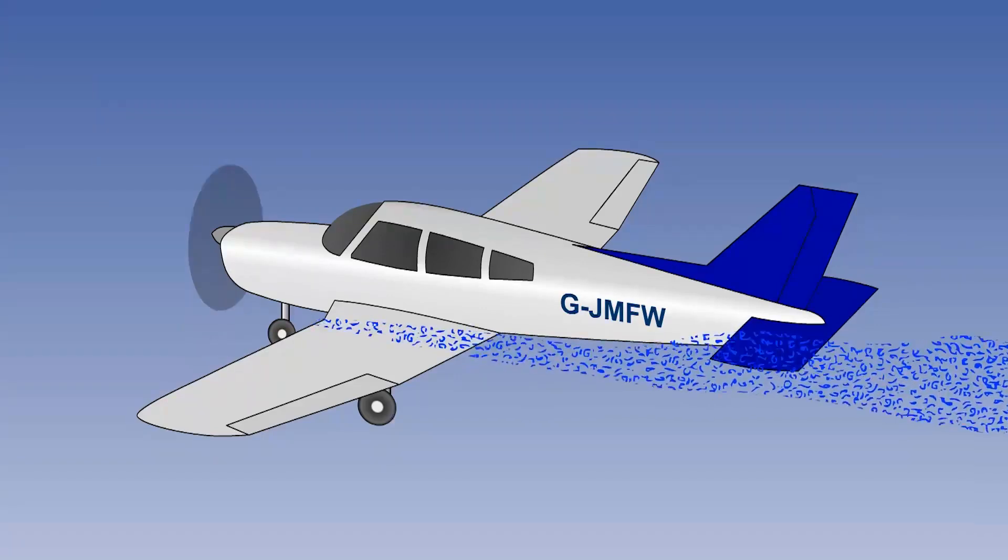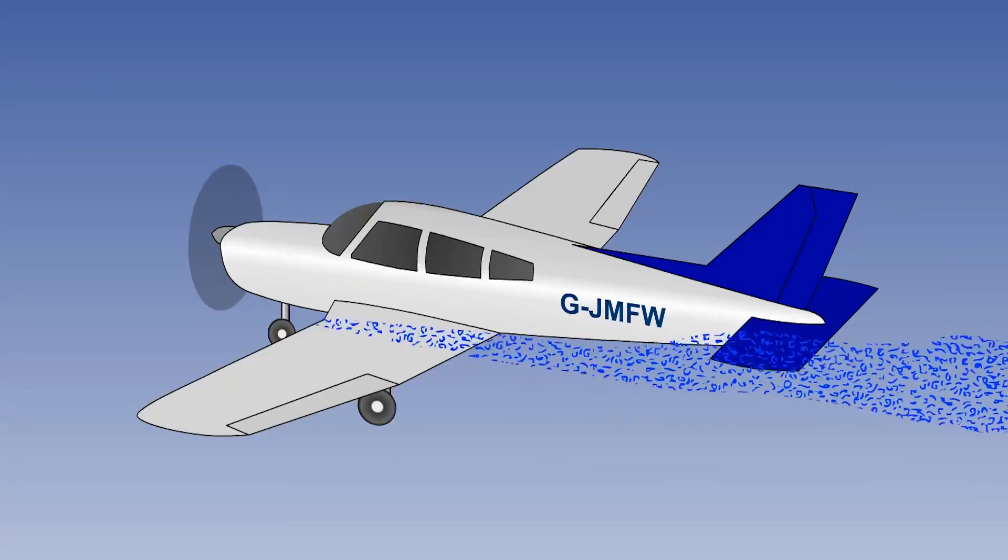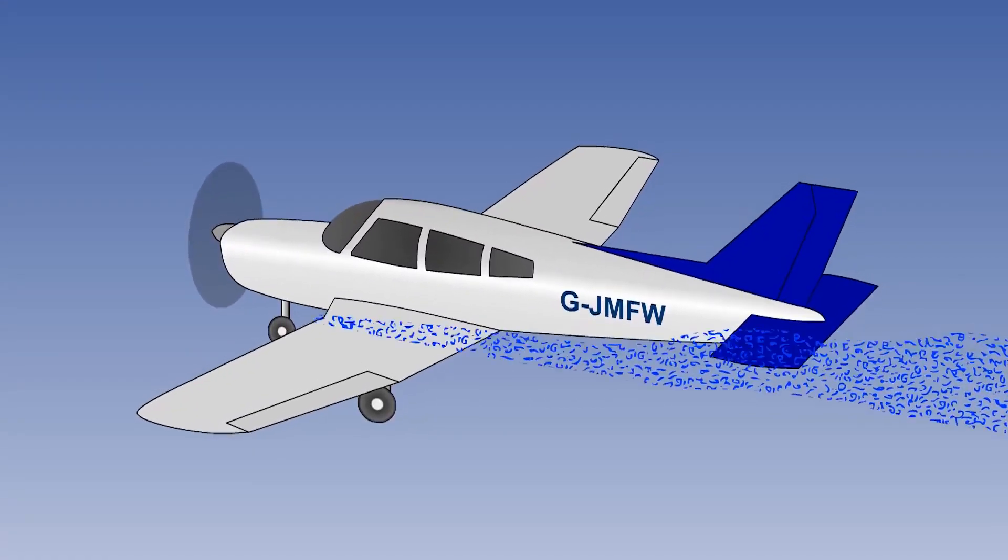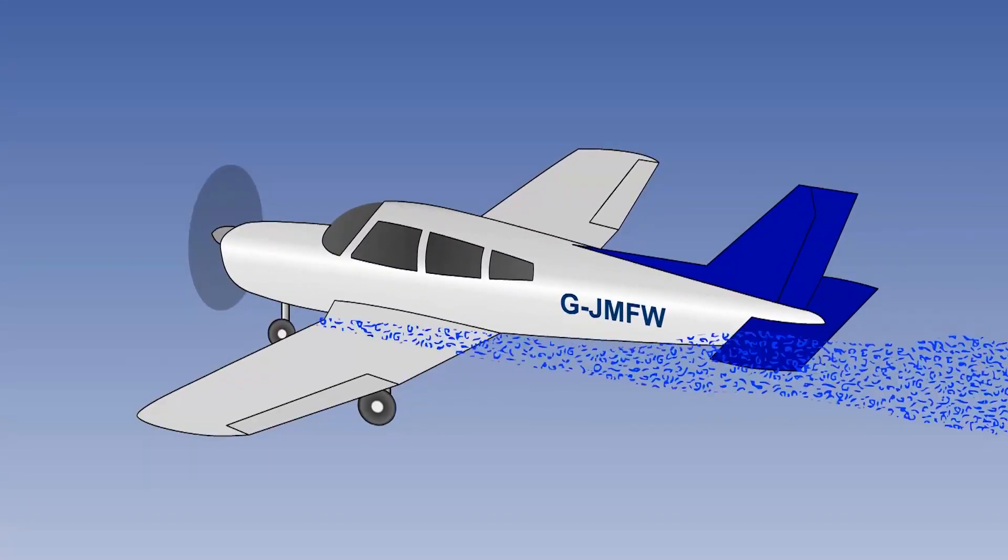The separated airflow from the wing root passes over the fuselage and tail unit, and the aerodynamic buffet caused by it can provide a warning of the approaching stall. The ailerons being located outside the separated flow will tend to remain effective as the stalling sequence starts.